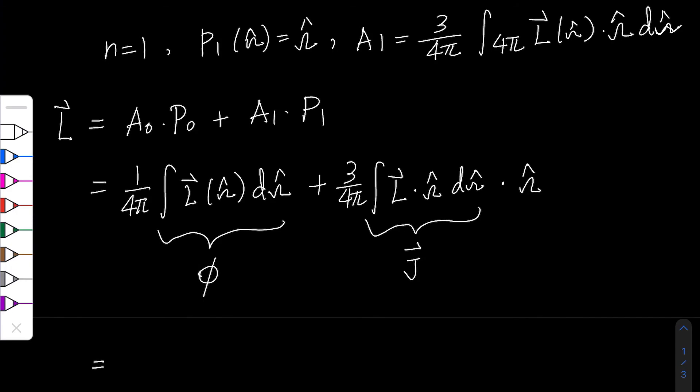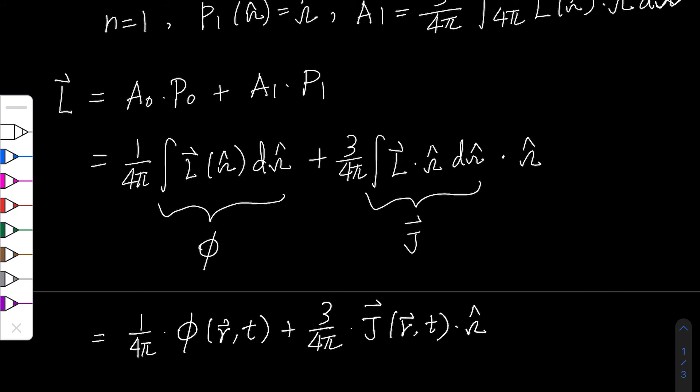So L can be further written as 1 over 4π times φ plus 3 over 4π times J times omega hat. So now we have expanded L term into a linear combination of photon flux and photon fluence.